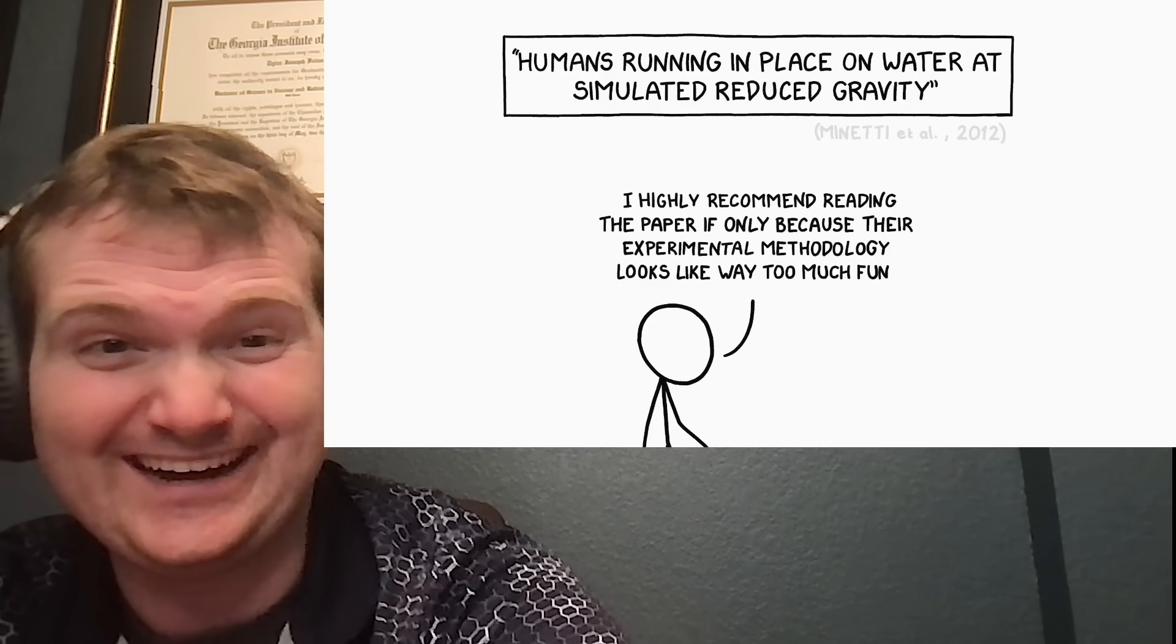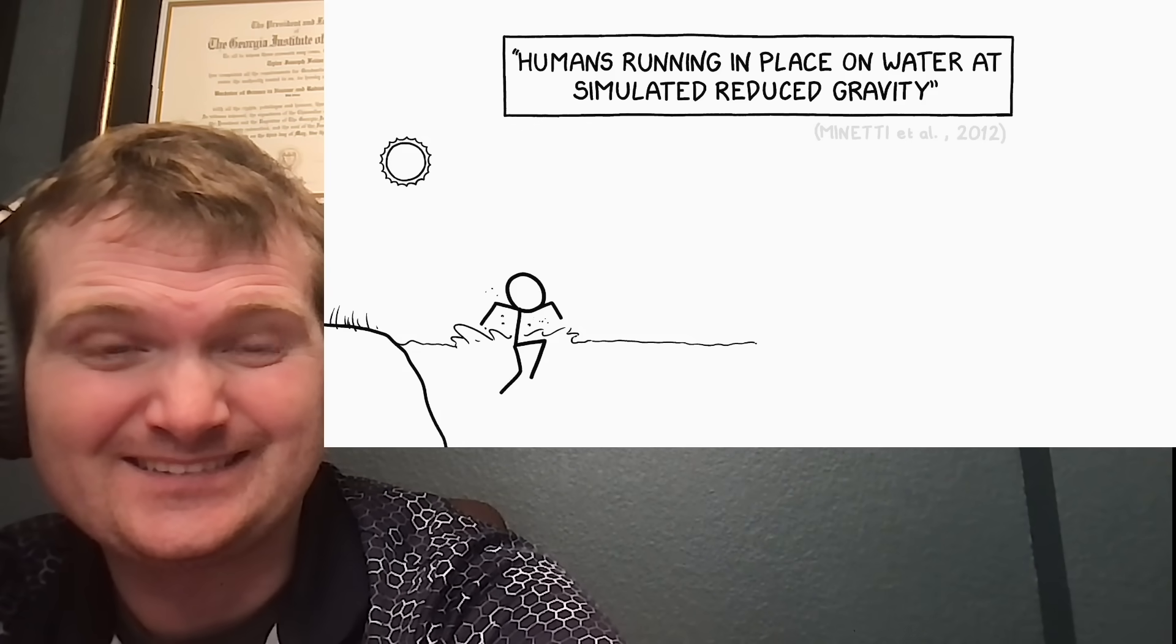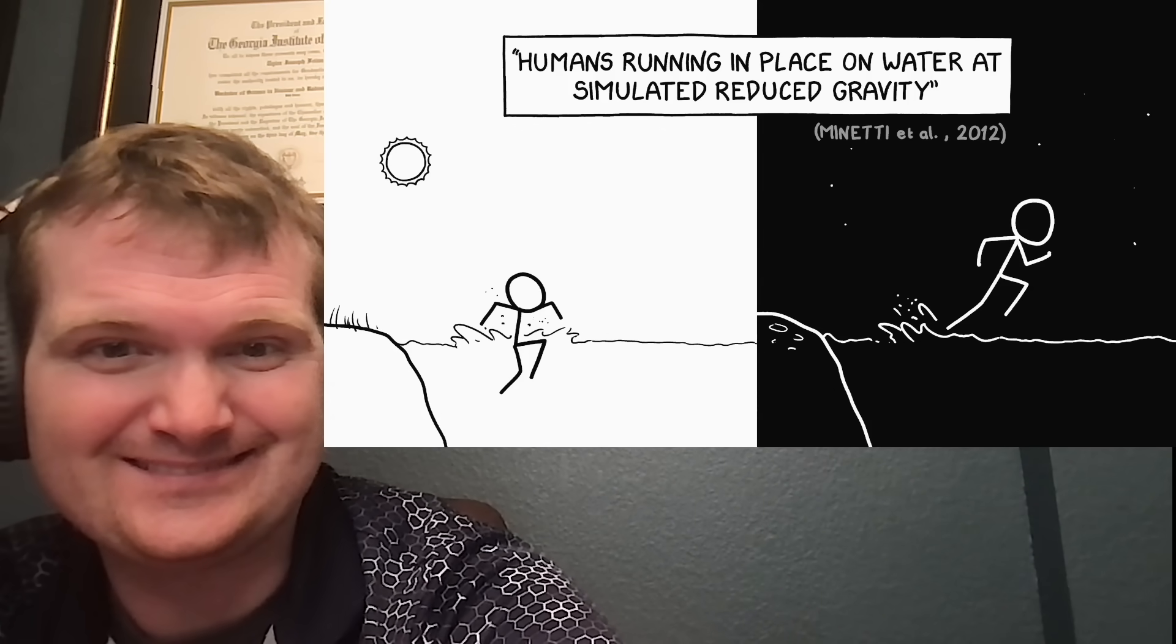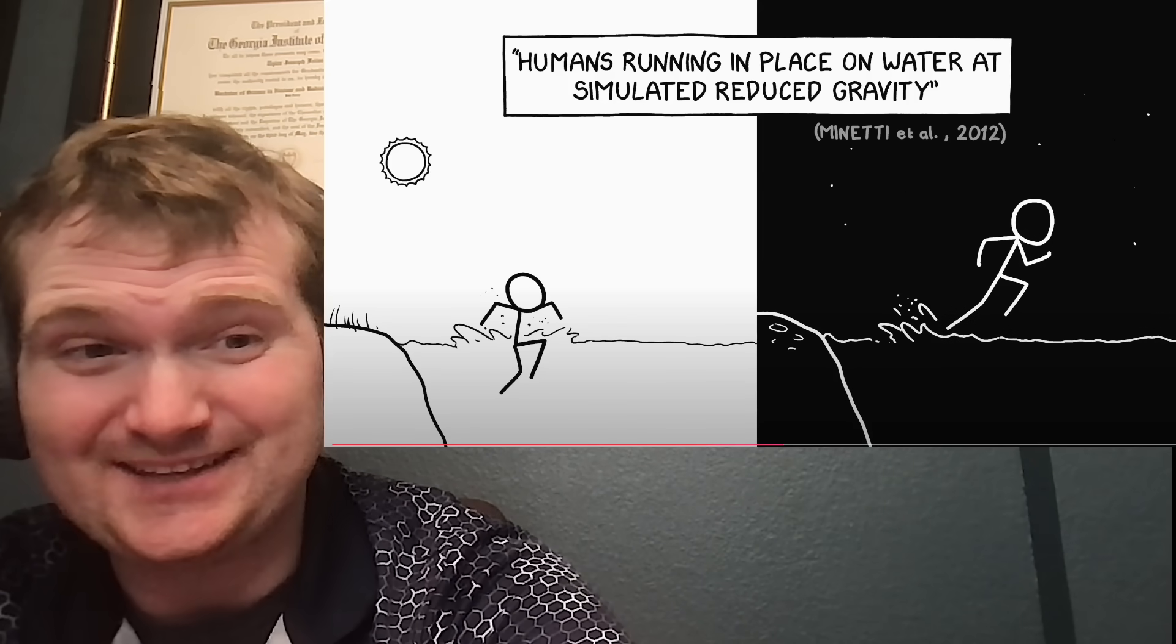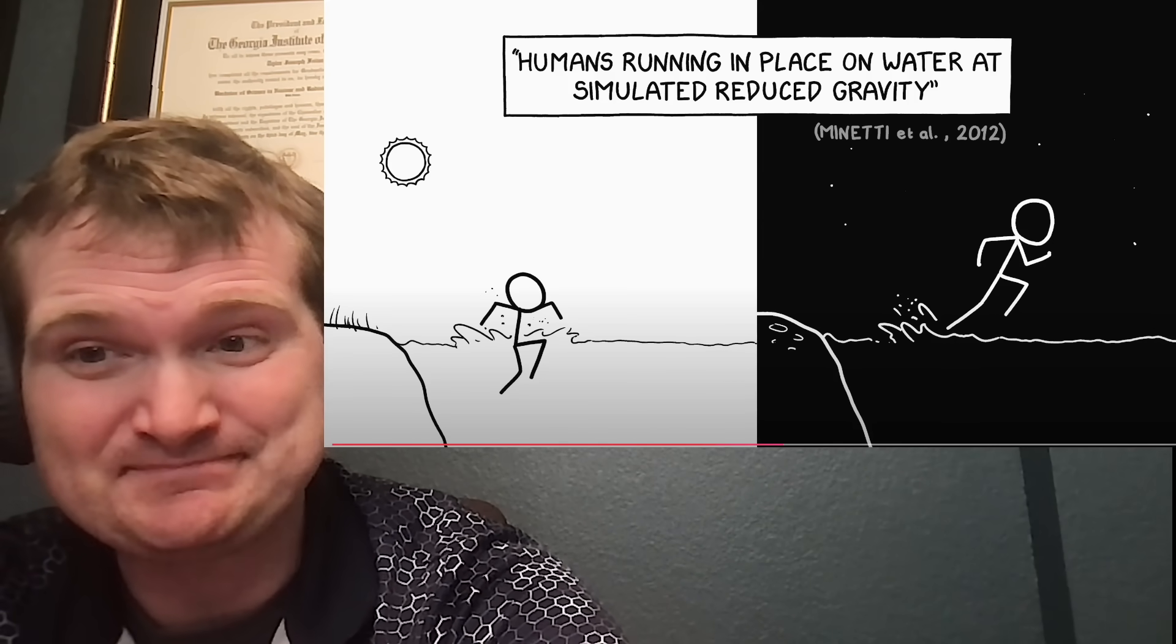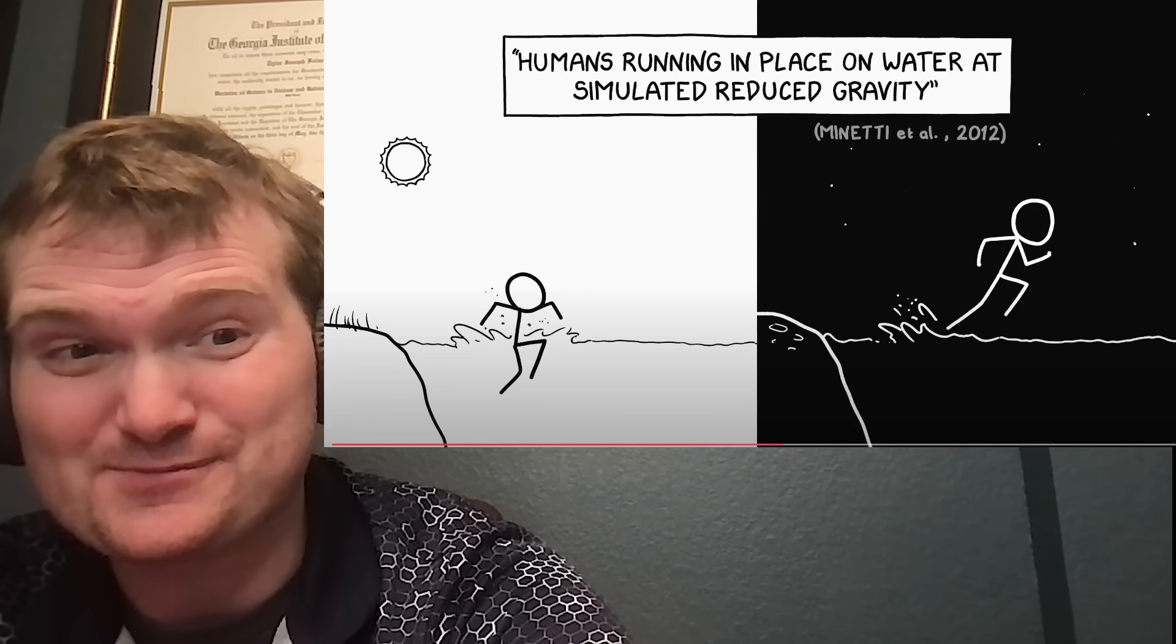And it gets even better. A 2012 paper concluded that while humans can't run on the surface of water on Earth, they might just barely be able to do so on the moon. Now that's interesting because the surface tension would dominate due to this reduced gravity. You're going to have some funky looking wave and ripple patterns too.